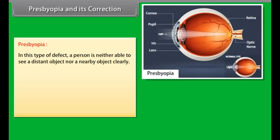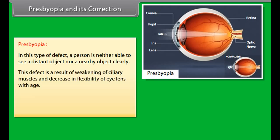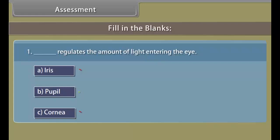Presbyopia: In this type of defect, a person is neither able to see a distant object nor a nearby object clearly. This defect is a result of weakening of ciliary muscles and decrease in flexibility of eye lens with age. To correct this defect, a person has to wear a bifocal lens having concave lens in upper part and convex lens in lower part.